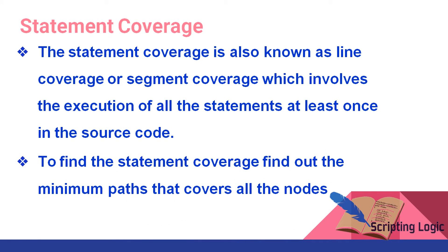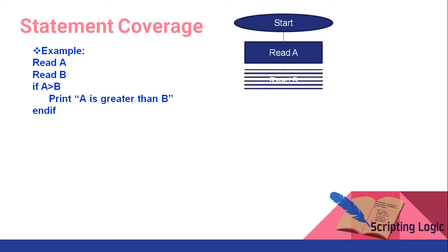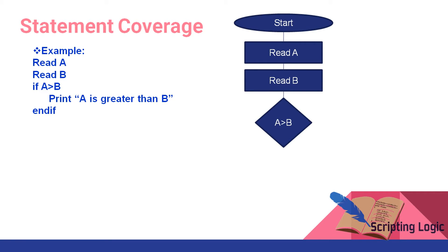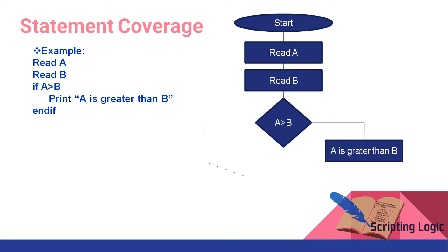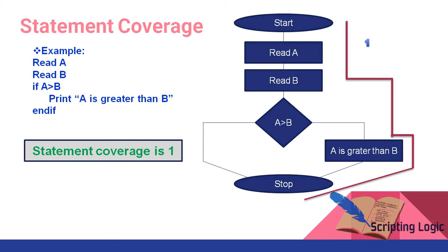To find statement coverage, find out the minimum path that covers all the nodes. Here is a simple pseudocode, and I have drawn a flowchart of it: start, read A, read B, if A is greater than B then 'A is greater than B', otherwise stop. There is exactly one path covering all the nodes, so the statement coverage is 1.